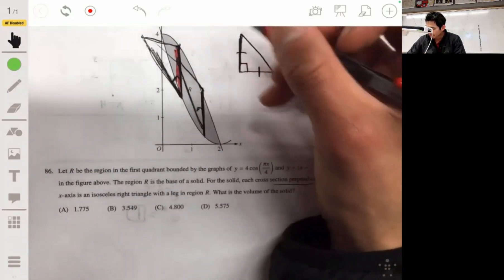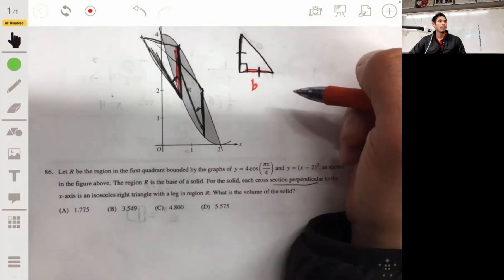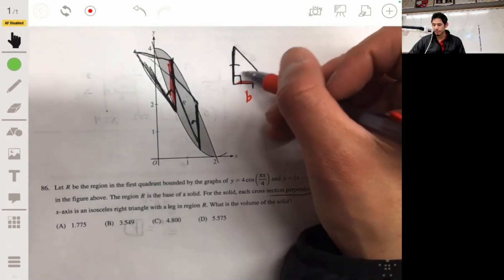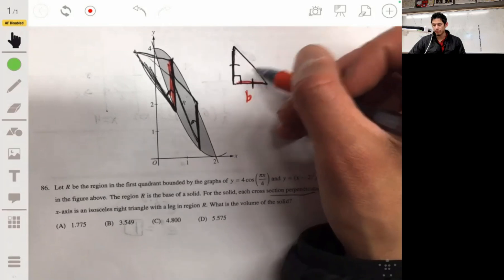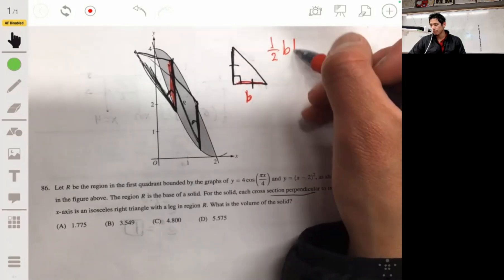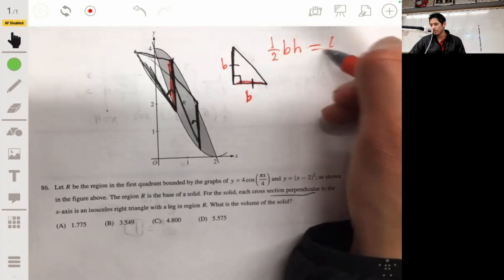Let me use a different color pen. So this base right here, let's pick that as our B. The area, we want to basically first find the area of this triangle, which is one half base times height. But since it's isosceles, it's one half base times base, or one half B squared.